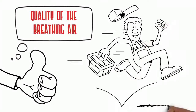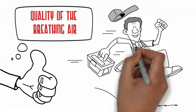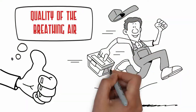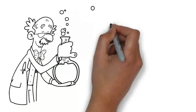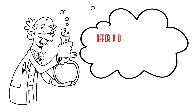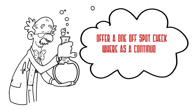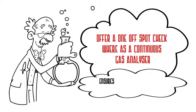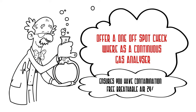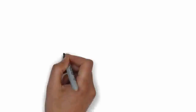To ensure the quality of the breathing air, it needs to be checked for contamination once it has passed through the compressor. Colorimetric tubes only offer a one-off spot check, whereas a continuous gas analyzer ensures you have contamination-free breathable air 24/7.